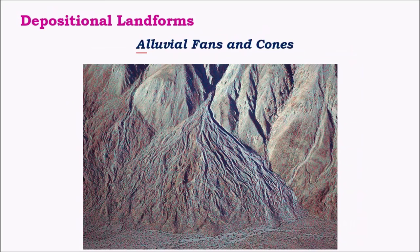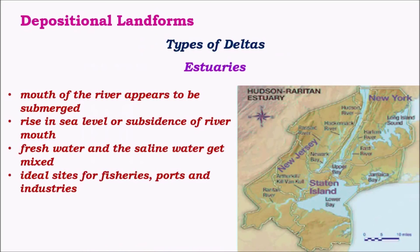Coming to depositional landforms, the first important one is alluvial fans or cones, which are mainly found in the lesser Himalayan or lower Himalayan regions, that is the Shivaliks. Shivaliks are mainly formed due to depositions accumulated over time due to rivers carrying huge amounts of silt from the main mountains. These depositions accumulate along these lines, giving rise to a hilly, silt and alluvium-filled landform called alluvial fans.